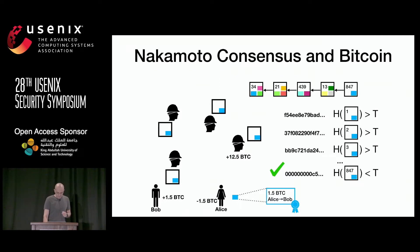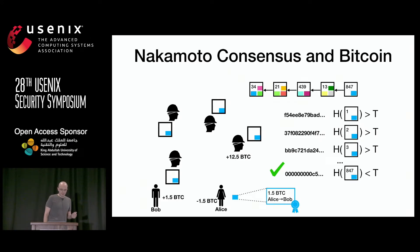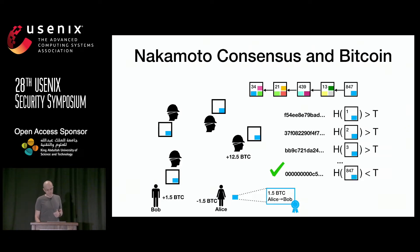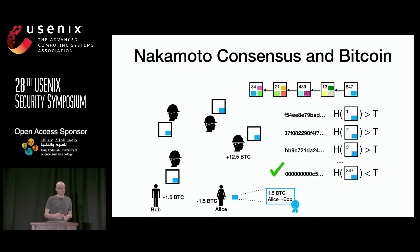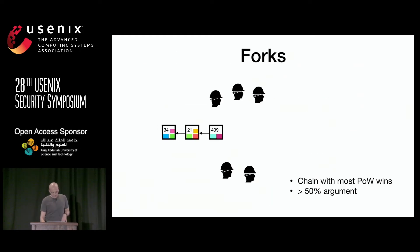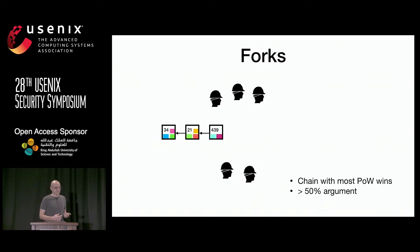Block publishing has three functions: it contains transactions, it confirms all previous transactions via hash pointers to previous blocks, and it proves that someone is the elected leader. This leader election is a non-interactive process, and thanks to this non-interactive leader election and verification, the protocol can scale to thousands of consensus nodes.